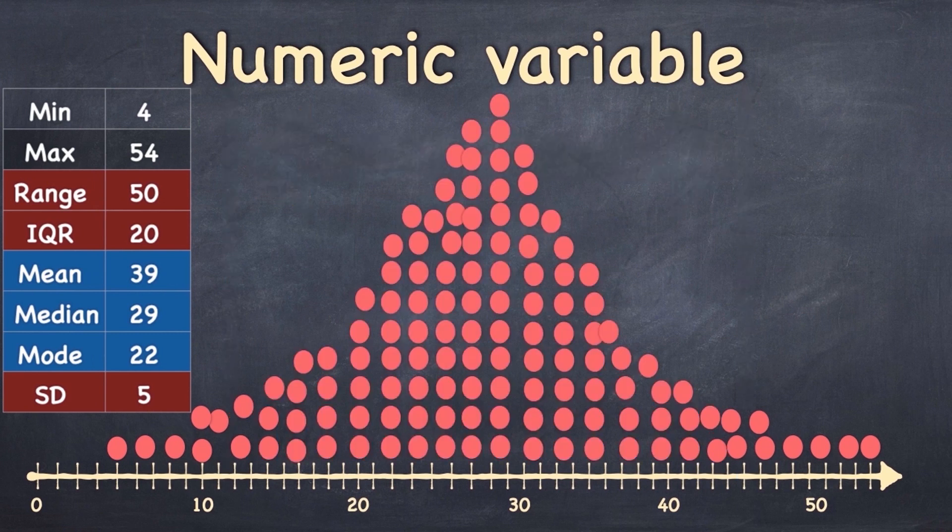So what have we got? We've got the mean, the median, and the mode. They're telling us about centrality, about the middle, where is the middle of this data. And then we've got the range, the interquartile range, and the standard deviation, and they're telling us about the spread and how spread out this data is.